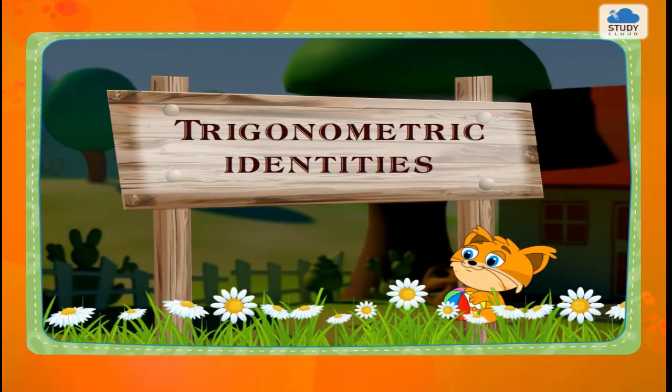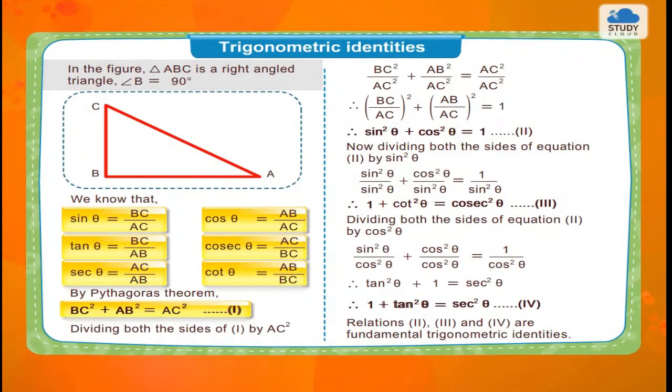Trigonometric identities. In the figure, triangle ABC is a right-angled triangle. Angle B is equal to 90 degrees.